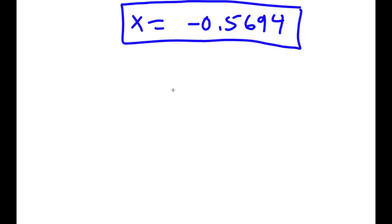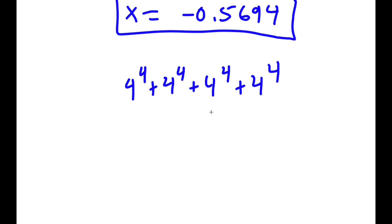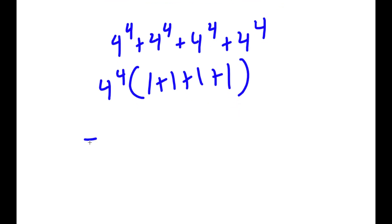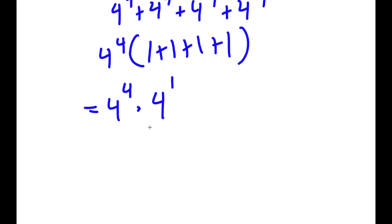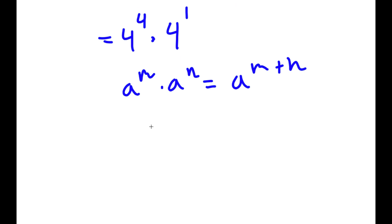Now we are going to try a similar problem, and this is actually much simpler. So we have 4 to the power of 4, plus 4 to the power of 4, plus 4 to the power of 4, plus 4 to the power of 4. What you have to do is factor out 4 to the power of 4, so you get 4 to the power of 4 times 1 plus 1 plus 1 plus 1, which equals 4. And 4 is the same thing as 4 to the power of 1. If I have something in the form a to the power of m times a to the power of n, this is equal to a to the power of m plus n. So 4 to the power of 4 times 4 to the power of 1 equals 4 to the power of 4 plus 1, which is equal to 4 to the power of 5.